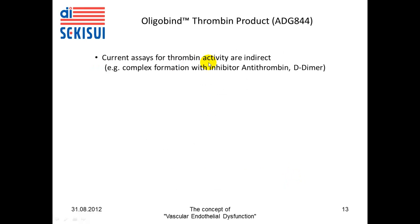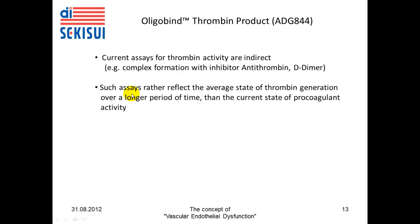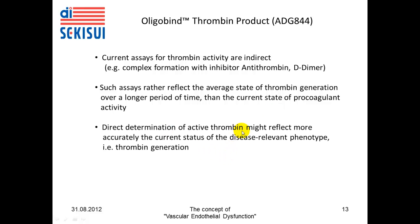Current assays for thrombin activity are indirect. For example, the TAT-ELISA is an assay for thrombin-antithrombin complexes, meaning that thrombin generation is indicated by the formation of thrombin-antithrombin complexes — or even more indirectly, the generation of D-dimers, which are products generated by fibrinolysis. TAT and D-dimer rather reflect the average state of thrombin generation over a longer period of time than the current state of procoagulant activity. We believe that direct determination of active thrombin may more accurately reflect the current status of the disease-relevant phenotype — that is, the ongoing thrombin generation in vascular dysfunction.